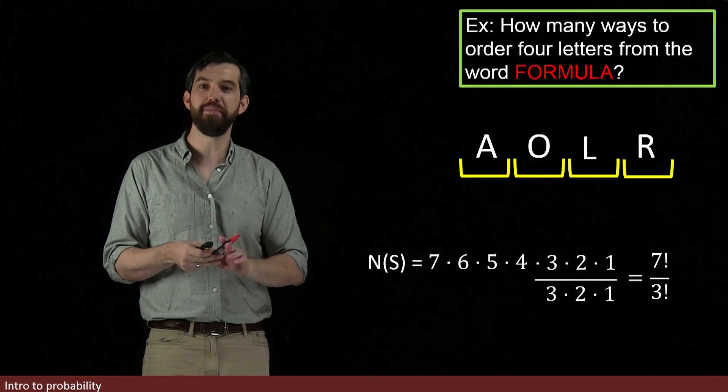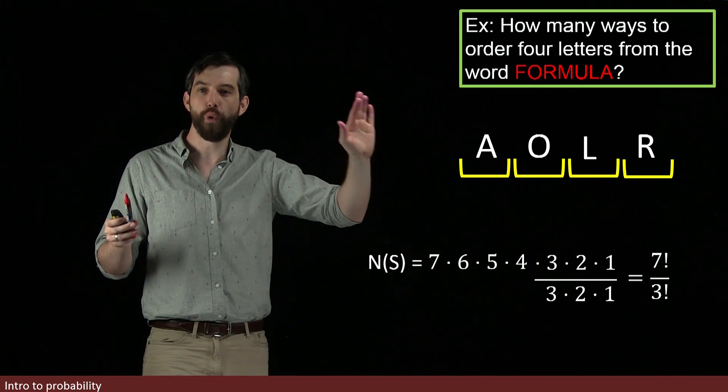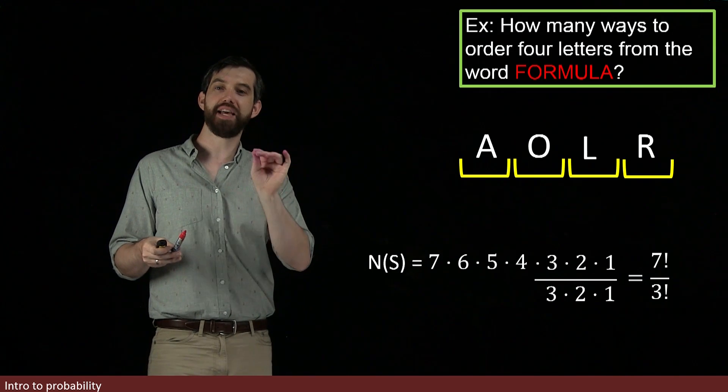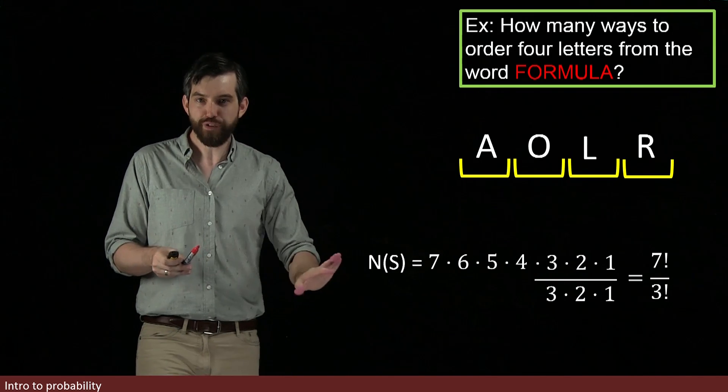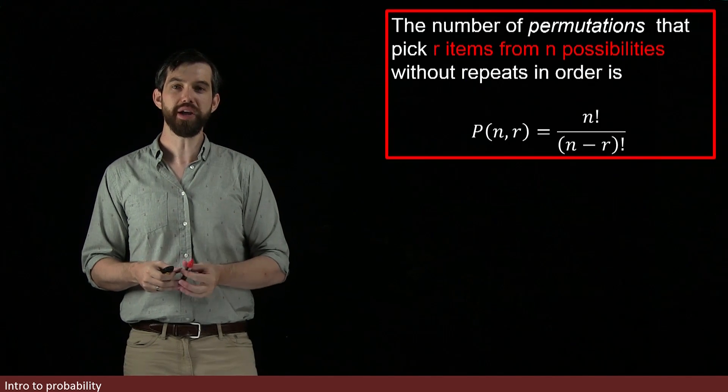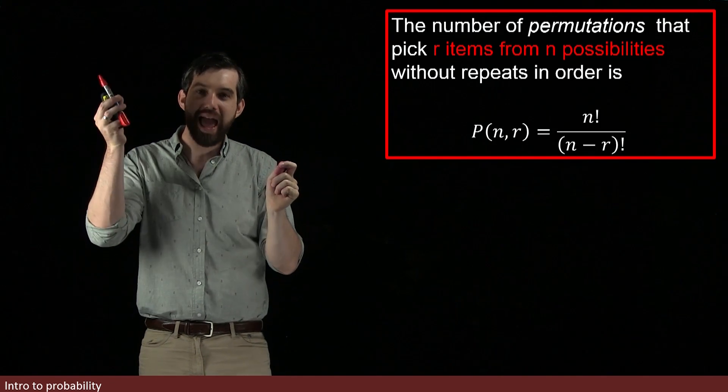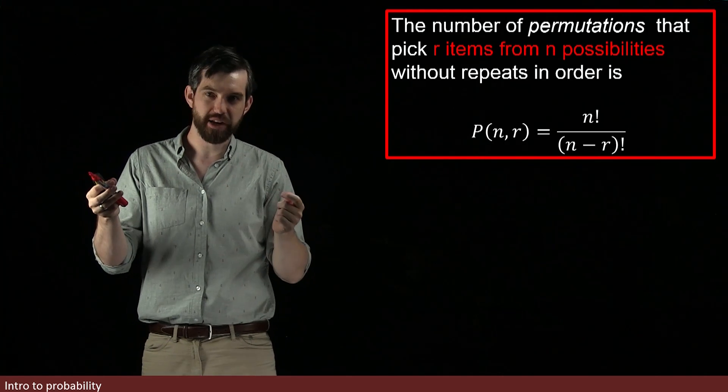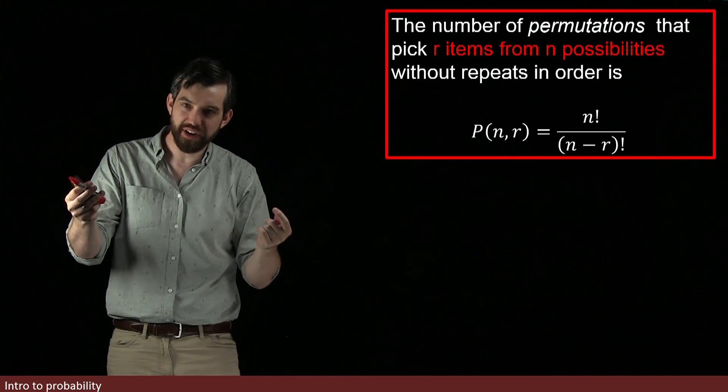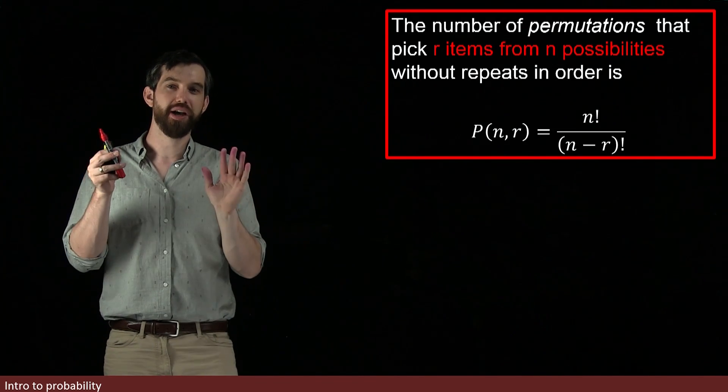This general construct where I am picking in an order that I care about some number, in this case four letters from a larger set, in this case seven letters, that is referred to as a permutation. And this formula that we have for the number here has a general formula for permutations. So we're going to say that a permutation is where I'm picking R items from N possibilities. I don't repeat my different items, but I do care about the order. So that's what a permutation is. Four items from seven is our previous example, where I slotted them in. I didn't repeat, but I cared which was first, and I cared which was second. I cared about order.